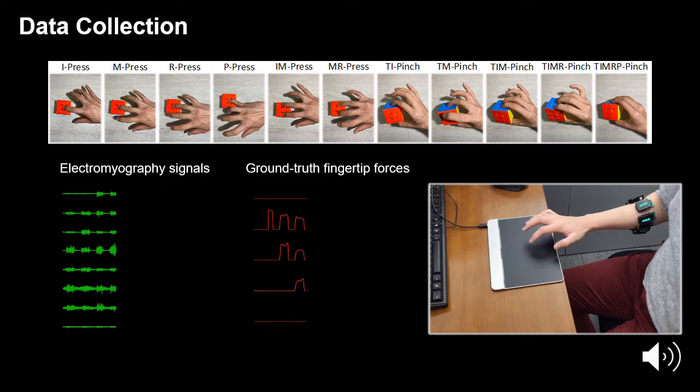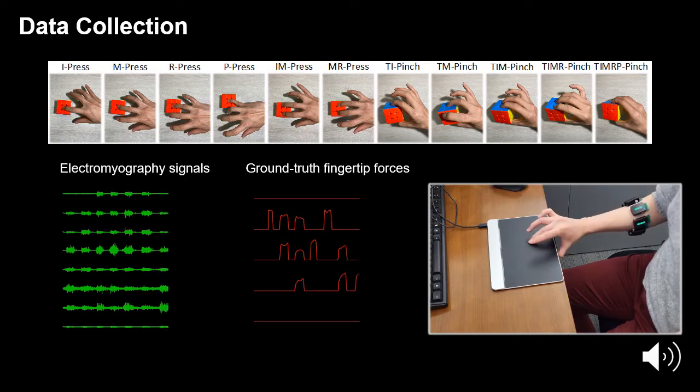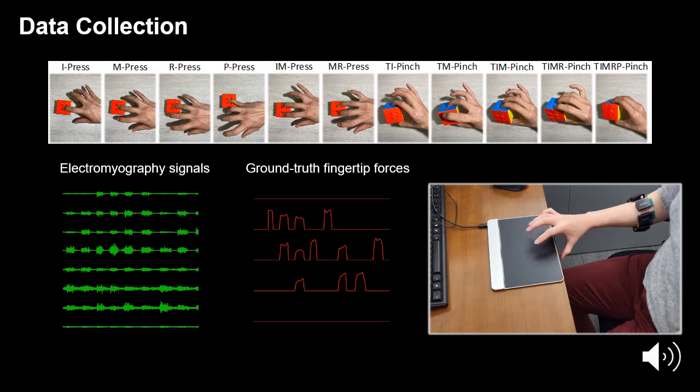Considering the complex relationship between forearm muscle activations and finger-wise forces, as well as its variations across people, we built a comprehensive training dataset covering common hand-object contact patterns, so that our machine learning models can effectively capture this relationship and acquire better generalization capability.